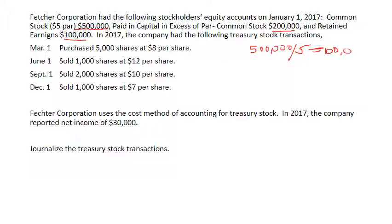At January 1st, the outstanding shares are 100,000. At March 1st, when they purchased 5,000 shares of treasury stock, the number of outstanding shares would be 95,000 shares. We need to know that because the outstanding shares are the shares you pay dividends on.